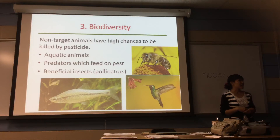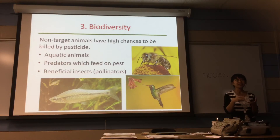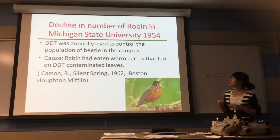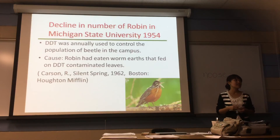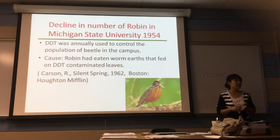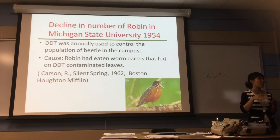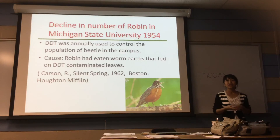Another thing is the predators who would feed on the pests can be killed by eating the contaminated pests. For example, there was a decline in the number of robins at Michigan State University in 1954. At that time, DDT — a kind of very dangerous pesticide — was annually used to control the pest population on the campus. After a period of time, there were fewer robins on the entire campus. The reason behind the decline in the number of robins was that robins had eaten worms that sat on DDT-contaminated leaves, and then the robins were killed indirectly by pesticides.